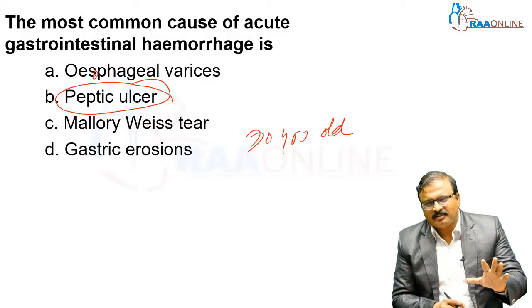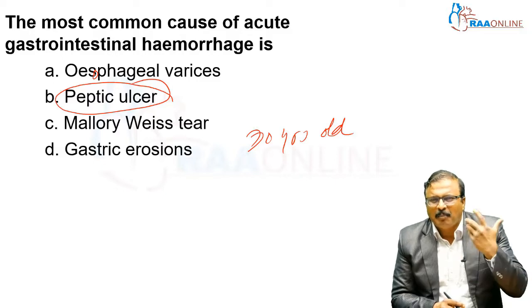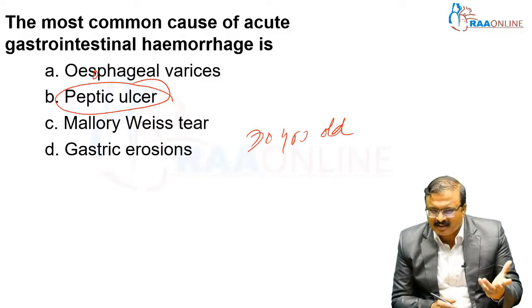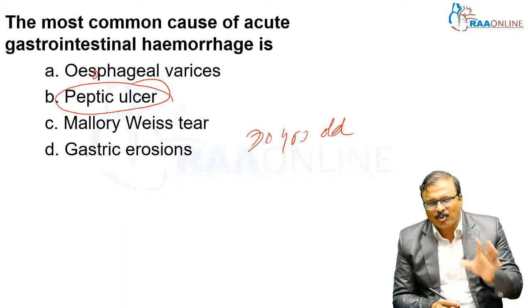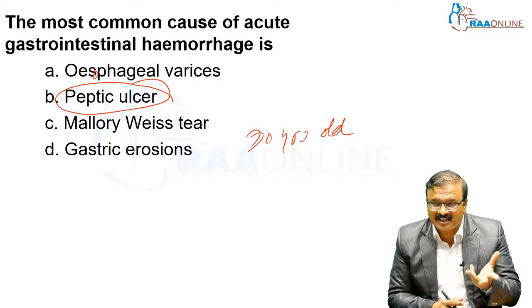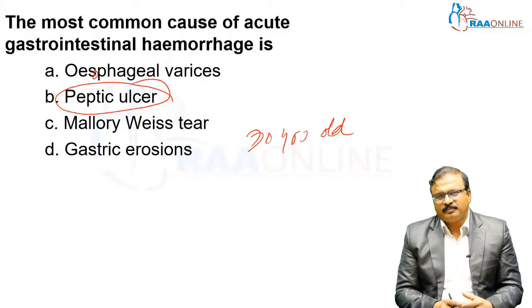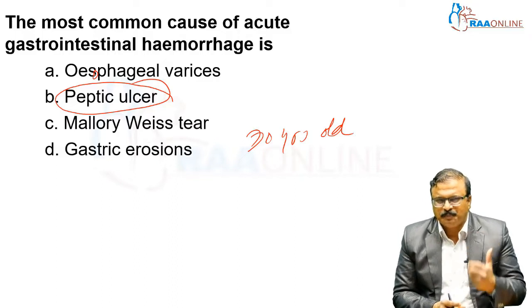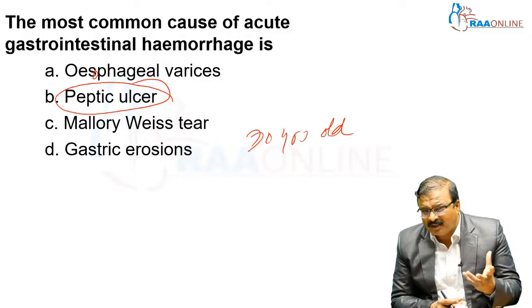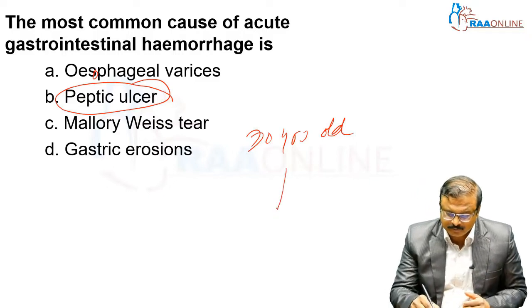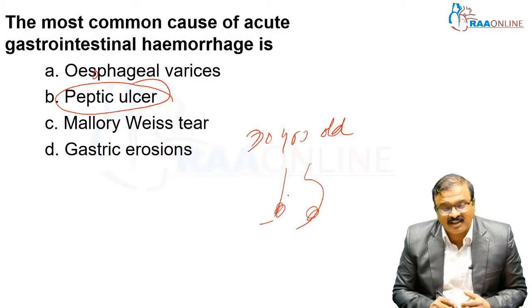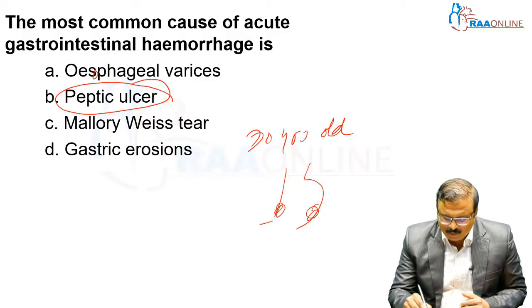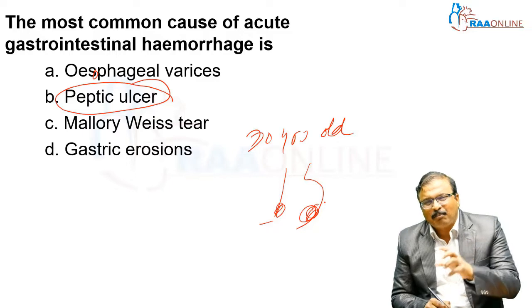Duodenal ulcer can perforate or bleed, and gastric ulcer can also present similarly. Both duodenal and gastric ulcers can have an initial presentation as a bleed — that is what we should know. Regarding common sites: greater curvature ulcer should raise suspicion for malignancy, whereas lesser curvature ulcer is more typical.